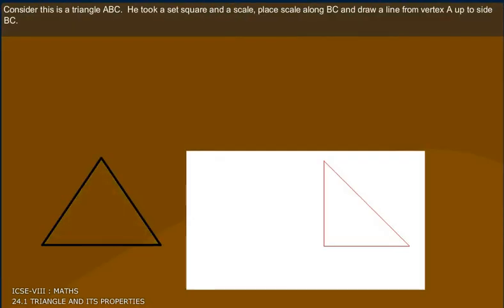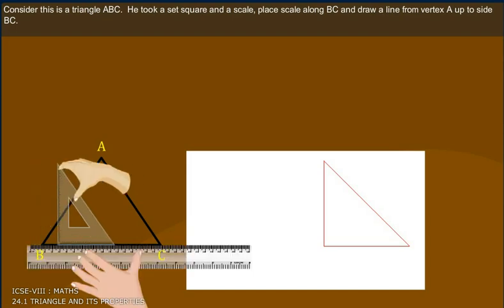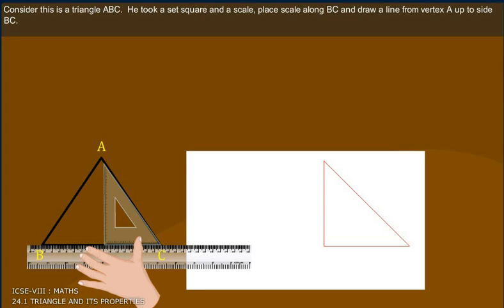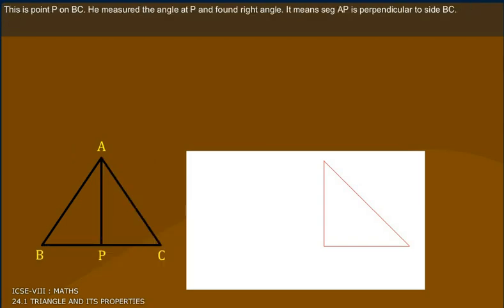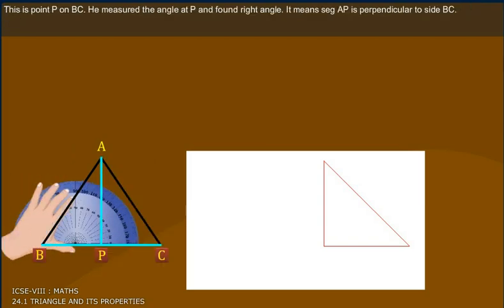Consider this is a triangle ABC. He took a set square and a scale. Place scale along BC and draw a line from vertex A up to side BC. This is point P on BC.